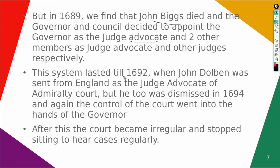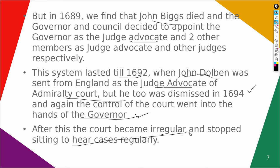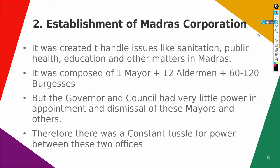This system, where the Governor took the place of the Judge Advocate and two council members took the place of the other judges, lasted till 1692. After that, John Dolben was sent from England as the Judge Advocate of the Admiralty Court, but he too was dismissed in 1694 — after just two years. Again, control went back into the hands of the Governor. The Governor and Council then became complacent and stopped regularly sitting to hear cases, and the administration of justice suffered as a result.